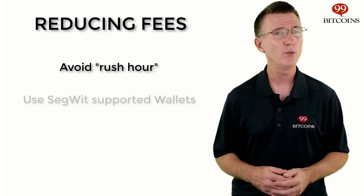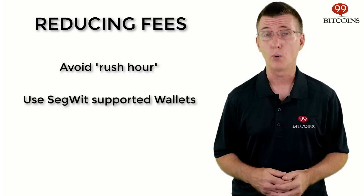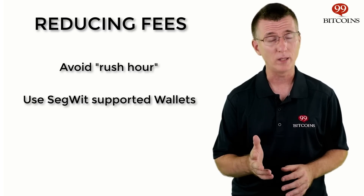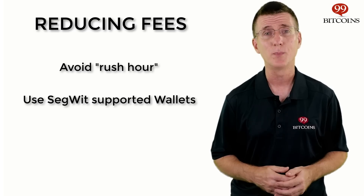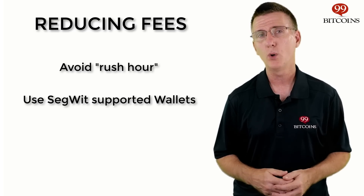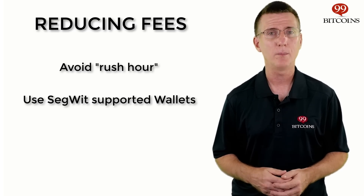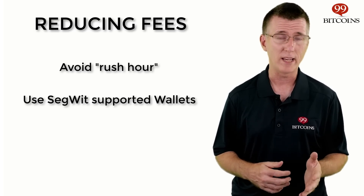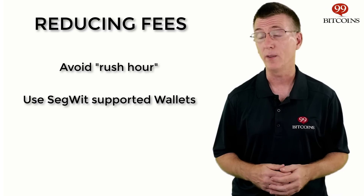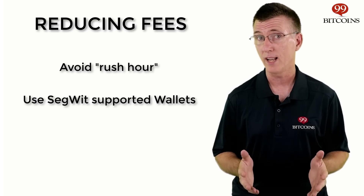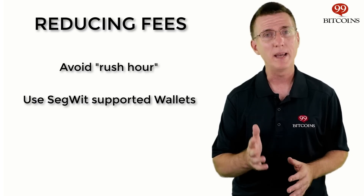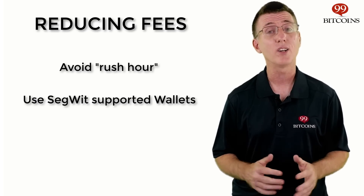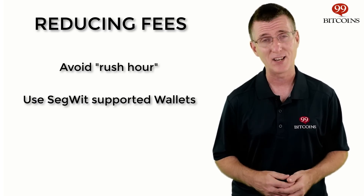Another option would be to use a wallet that supports SegWit. SegWit, short for Segregated Witness, is a bitcoin protocol upgrade which configures the transaction's data in such a way as to create a file that is smaller in size. Many wallets already support this feature, and it can cut costs substantially.